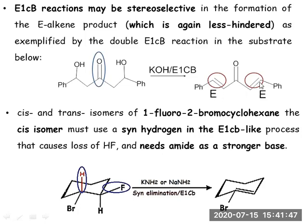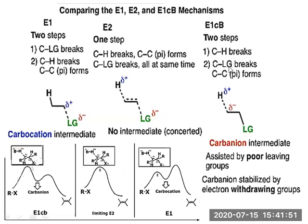Now we have covered E1 in module one, E2 in module two, and E1cB in this module. Let us compare these three. Both E1 and E1cB are two-step reactions, whereas E2 is a one-step mechanism. In E1, the leaving group departs first to form a carbocation, and then the C–H bond breaks to give the unsaturated product. The hydrogen and the leaving group are trans to each other.